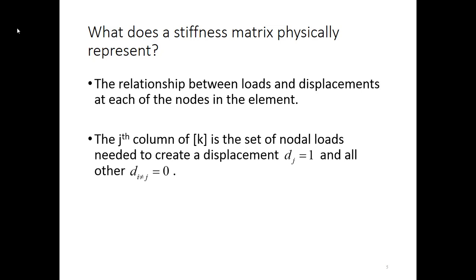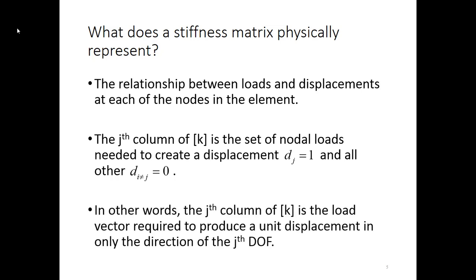Let's look specifically at one column of a stiffness matrix. We'll call it column J. The Jth column of K is the set of the nodal loads that are needed to create a displacement at degree of freedom J. So let's say this is the third column of K. We are looking at the third degree of freedom, D sub 3. We want that to have a displacement of 1 and then all the other degrees of freedom to be equal to 0. So, in other words, we have a load vector that is the load vector that produces a unit displacement in only one direction, only at one degree of freedom.